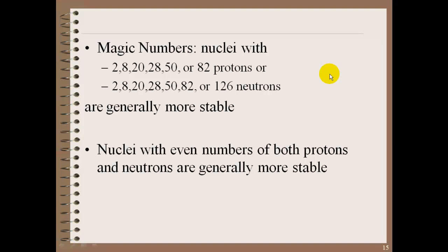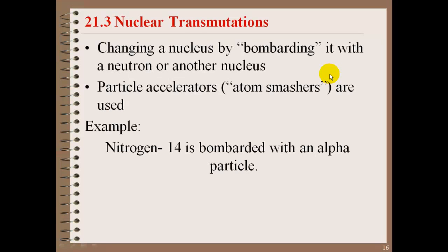Also, it said that nuclei with even numbers of both protons and neutrons are generally more stable. So just a few things to keep in mind when we're looking at the stability and trying to predict whether a radio nuclei will go through a decay and what type of decay it needs to go through.